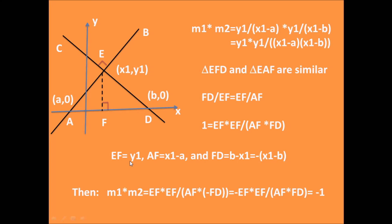Then the product of the two slopes m1*m2 = EF*EF/(AF*(-FD)) = -EF*EF/(AF*FD).